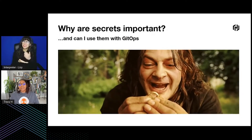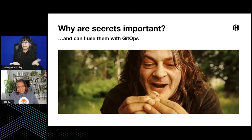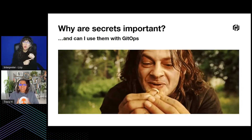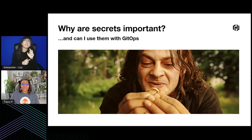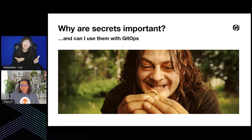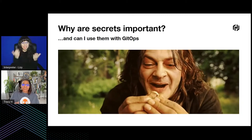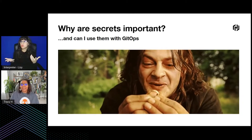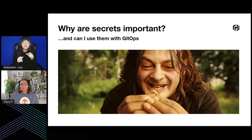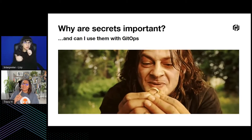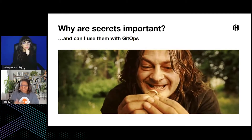Why are secrets important, and can you use them with GitOps? A secret is anything that you want to tightly control access to. In our realm, it's usually API encryption keys, passwords, and certificates. Secrets are important because you typically want to keep your secrets secret. And yes, you can use them with GitOps.